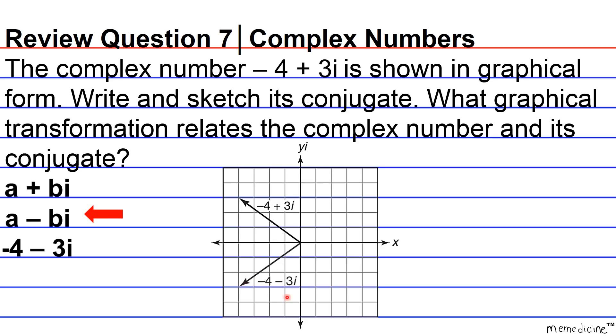And this is the graph of the conjugate of negative 4 plus 3i. And we see that there's basically been a reflection about the x-axis or a vertical flip, not a horizontal flip. Vertical flips correspond to reflections about the x-axis and horizontal flips correspond to reflections about the y-axis.